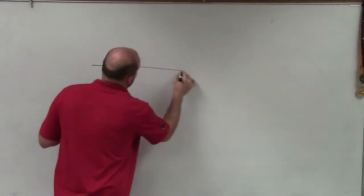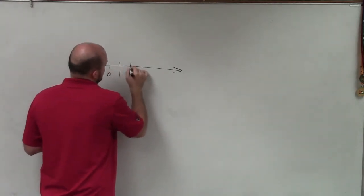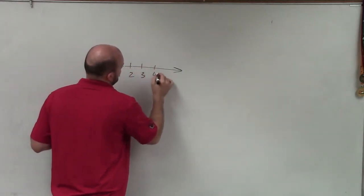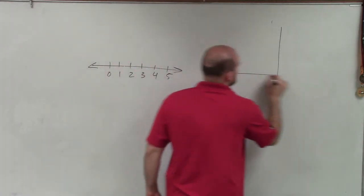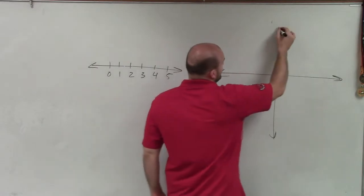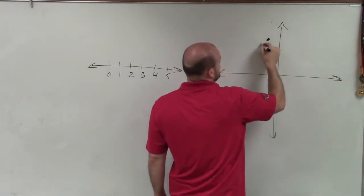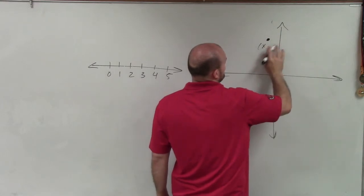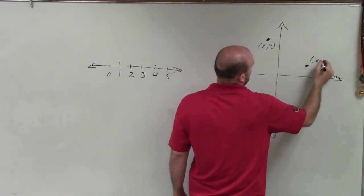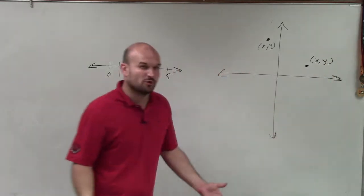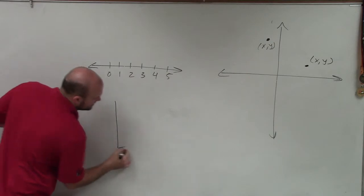So let's take a look at a number line, first of all. And let's say here's 0, 1, 2, 3, 4, 5. And then let's take a look at a coordinate plane, which is pretty much two number lines, one horizontal, one vertical. And then we'll have two points here. So this point is x, y. And then we'll have a point over here, which I'll call x, y as well, since they're both coordinate points x, y.